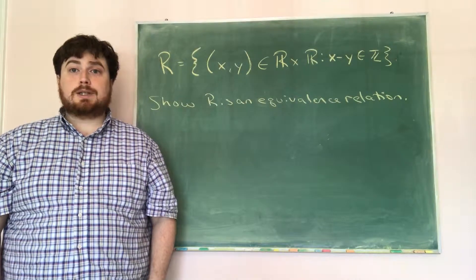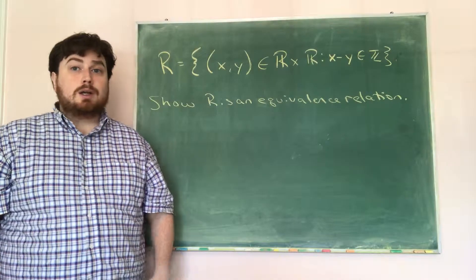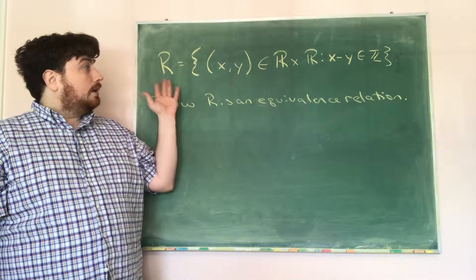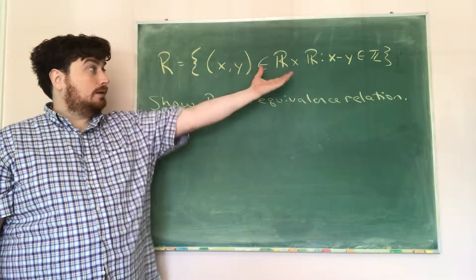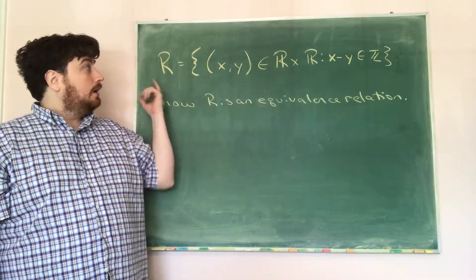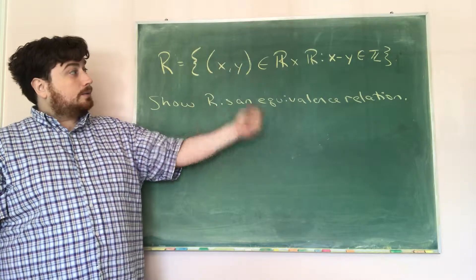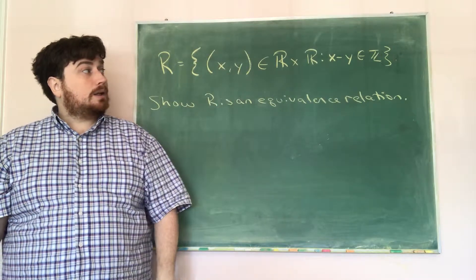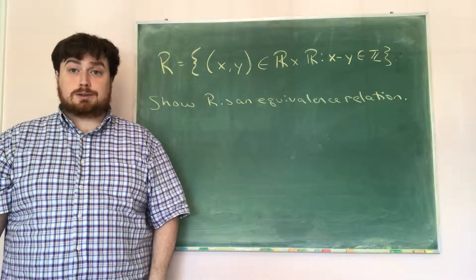Hello, mathematicians. Thanks for joining me as we look at the relation r on the set of real numbers given by r as the set of ordered pairs (x, y) in r cross r such that x minus y is an integer.